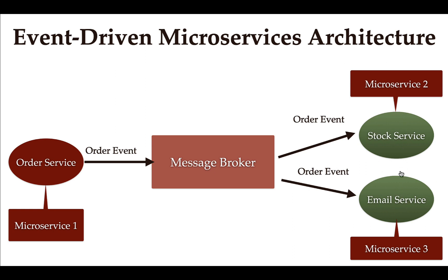The consumers don't have to know about the producer. They are only responsible for consuming or reading the message from the message broker — they don't need to know who is producing the messages. This is how event-driven architecture works: all applications are loosely coupled.